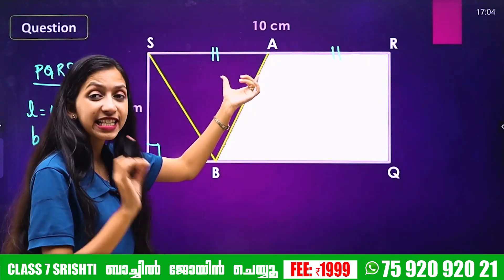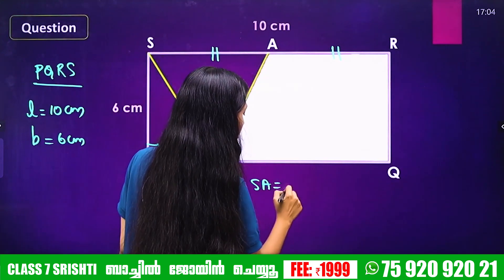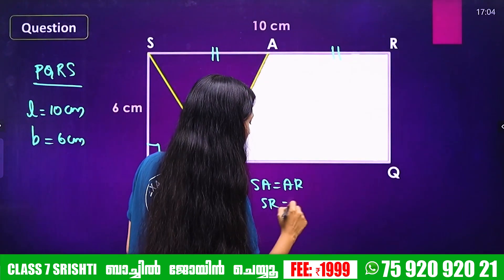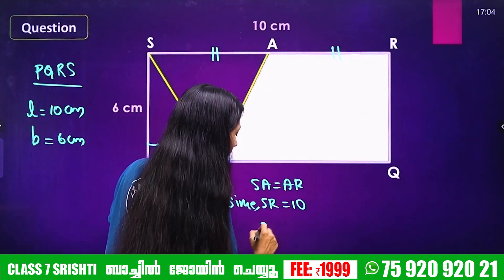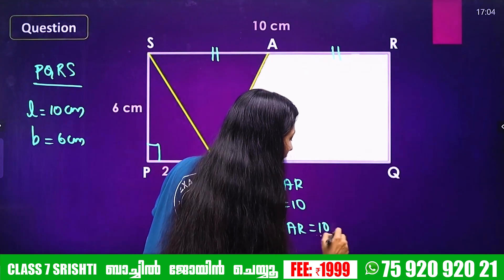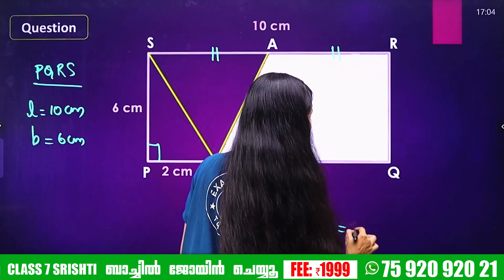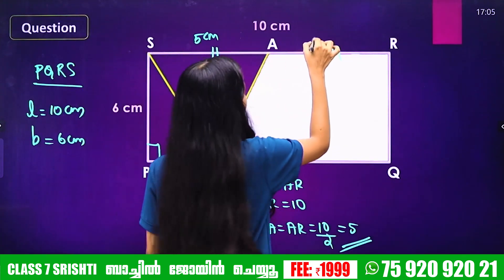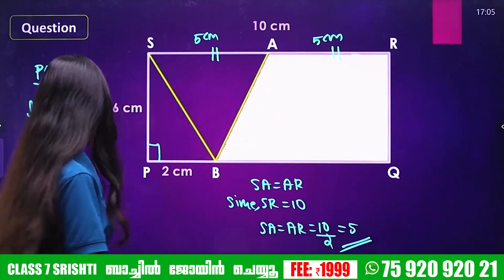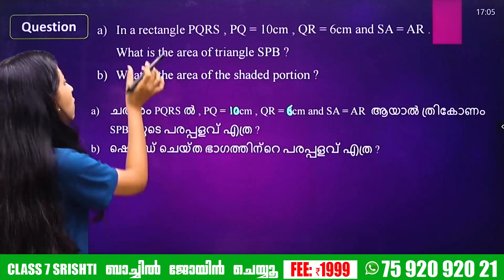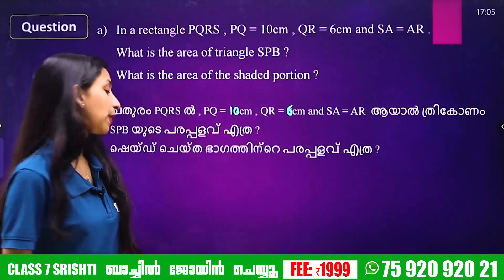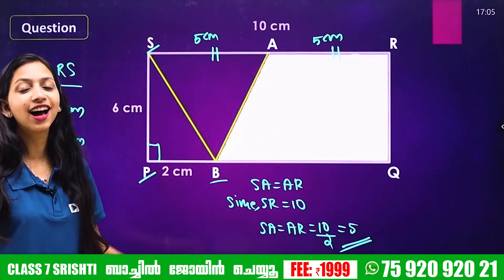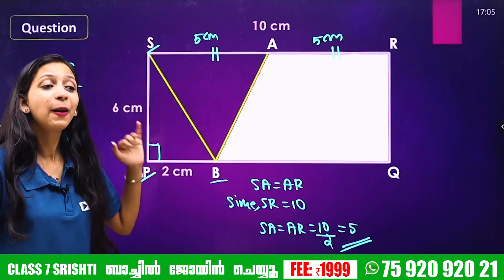Since SA equals AR and SR equals 10 cm, each part is 10 divided by 2, which is 5 cm. So SA equals AR equals 5 cm. Now, what is the area of triangle SPB? SPB is a right-angled triangle.